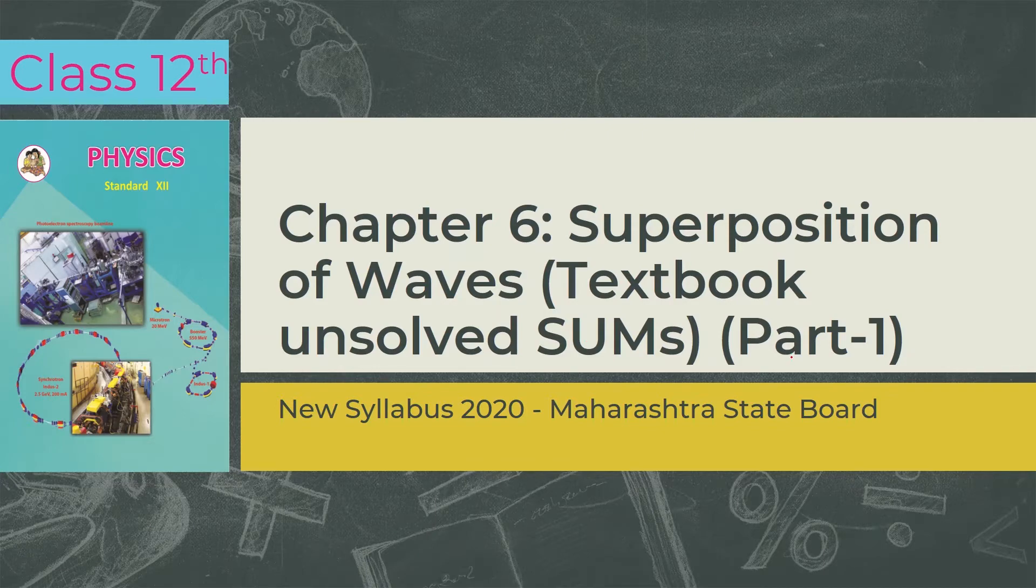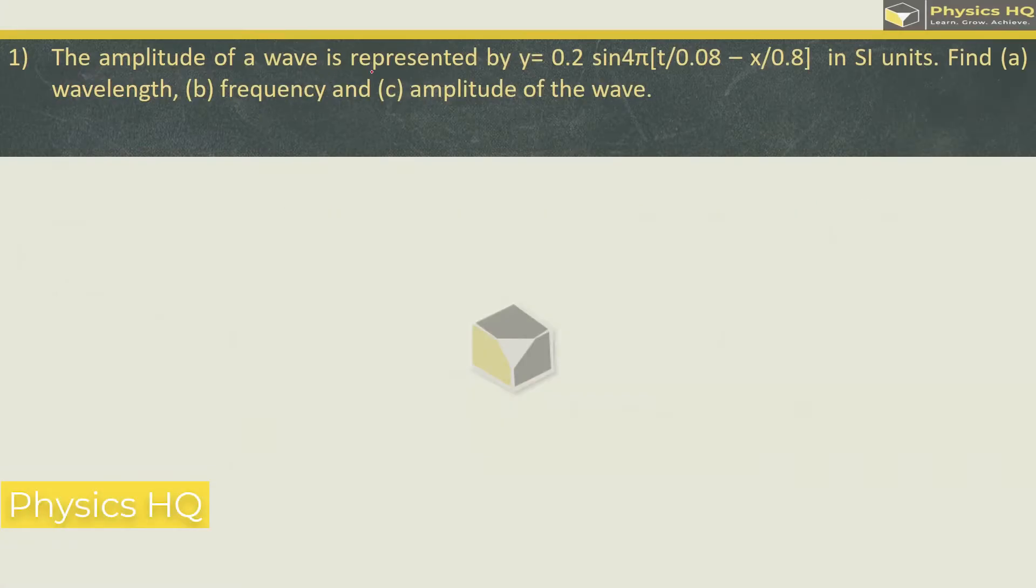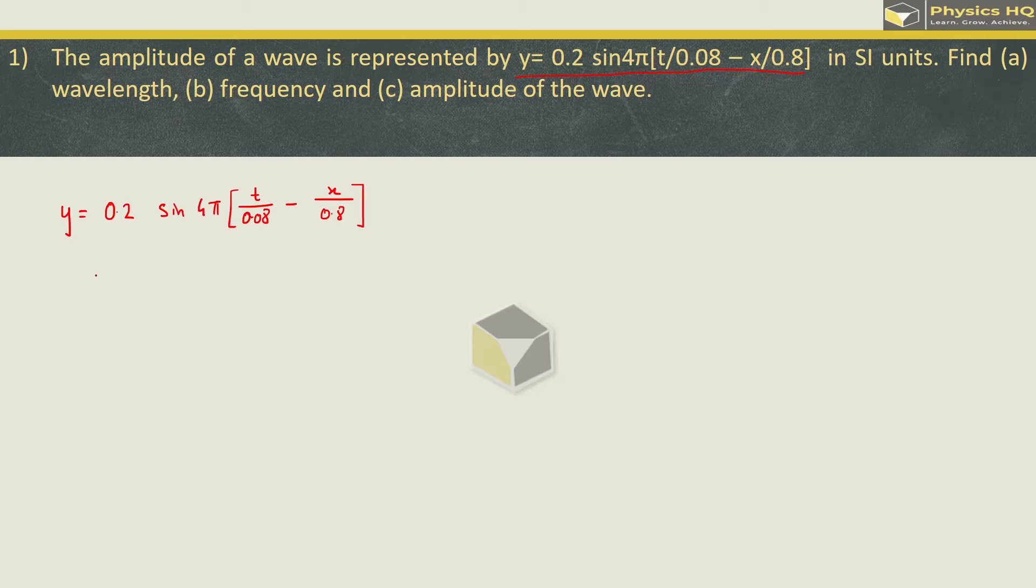Let us start with the first sum for today. The amplitude of a wave is represented by y equals 0.2 sin of 4 pi times t by 0.08 minus x upon 0.8 in SI units. So let us write down the equation first. Now when we compare this with standard equation, what we see over here is: